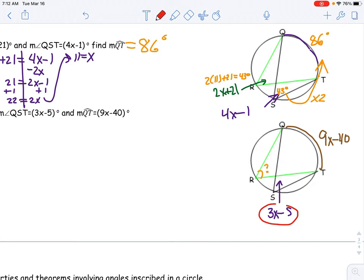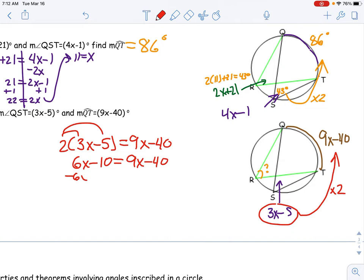Alright, so something to remember: we can divide the arc by 2, or I can multiply the inscribed angle by 2. I'm a multiplying by 2 kind of guy because it's going to limit the interaction we have with fractions, and sometimes fractions can scare us. So all I'm going to do is multiply it by 2 and then set it equal to the arc. Distribute: 6x minus 10 equals 9x minus 40.